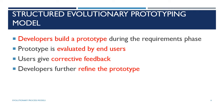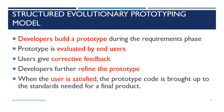The prototype code is brought up to the standards needed for a final product. In the requirements phase of the structured evolutionary prototyping model, the prototype is built, end users evaluate it, corrective feedback is provided, the prototype is refined and modified, until ultimately the customer is satisfied and code development proceeds.